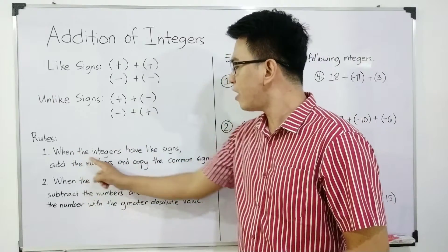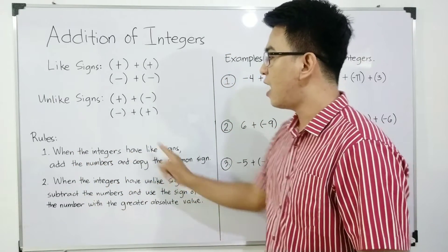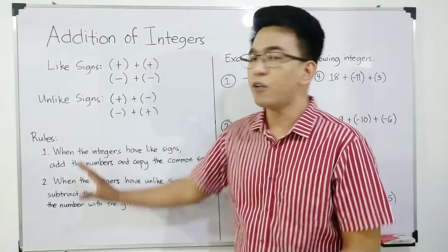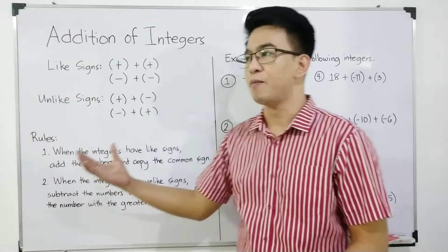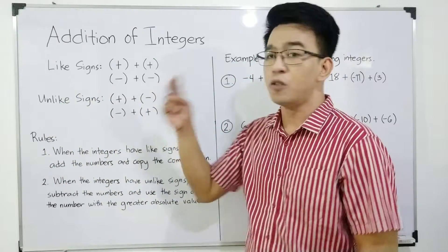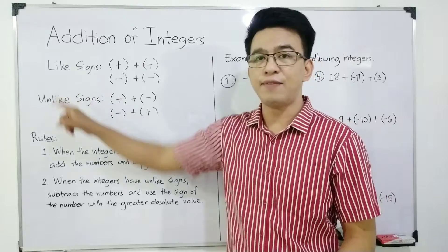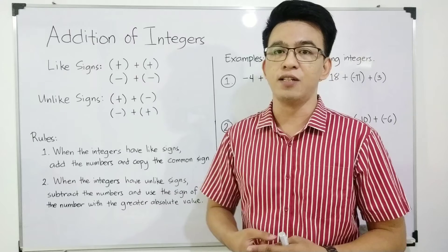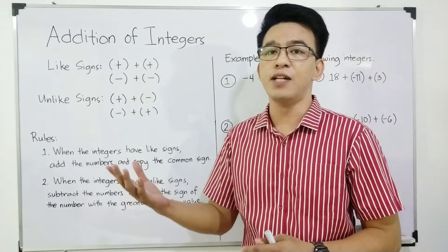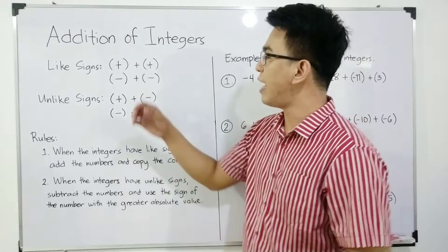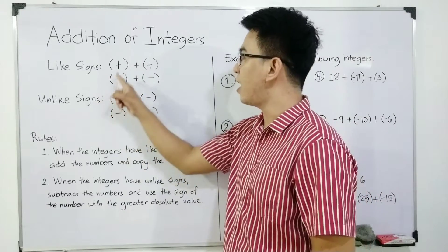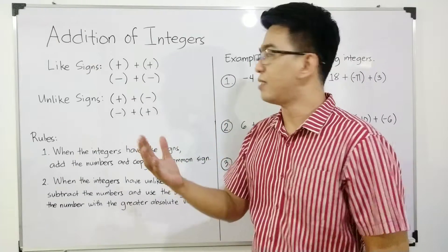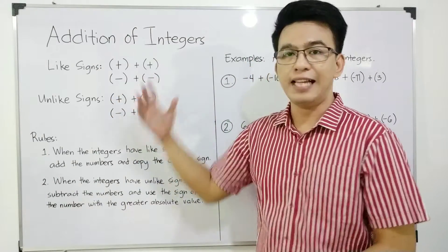First one, when the integers have like signs, add the numbers and copy the common sign. Binasa mo ito para mapuntahan natin yung situation natin. This one is based on two different integers. First, we have the like signs. When we say like signs, meron tayong two signs of integers. We have the positive numbers and negative numbers. If you have like signs: positive plus positive — like signs. Negative plus negative — like signs.